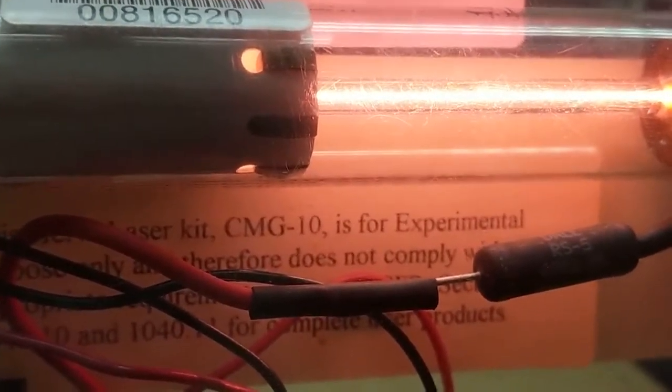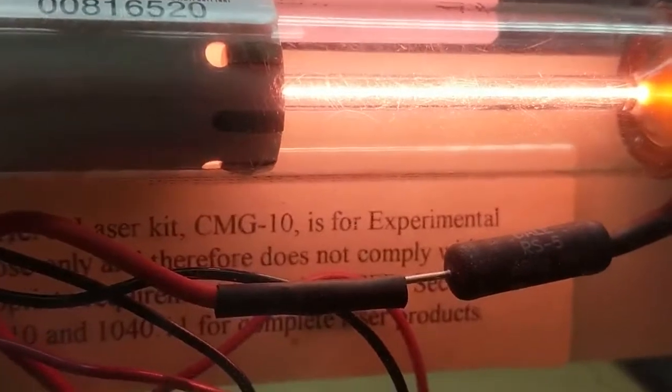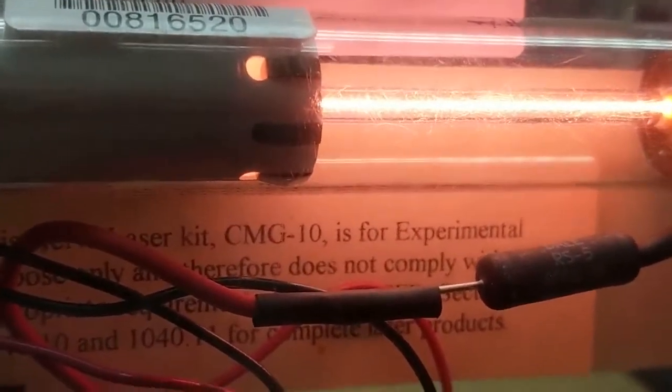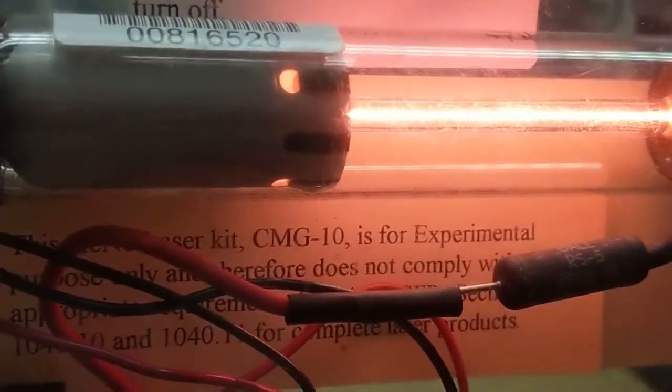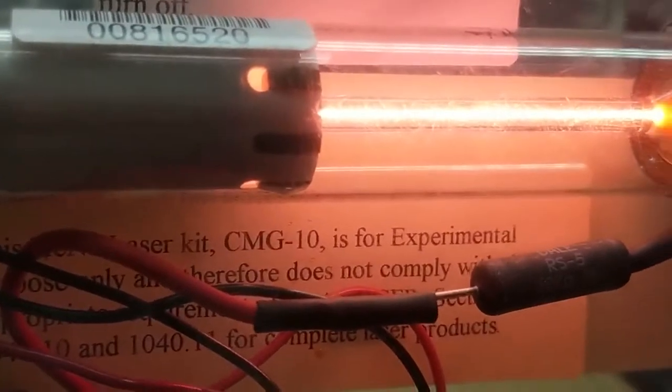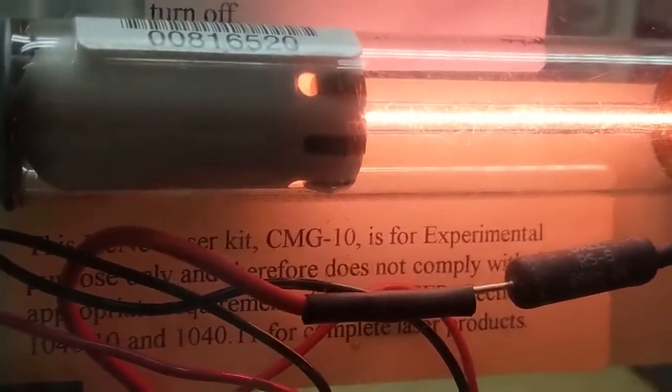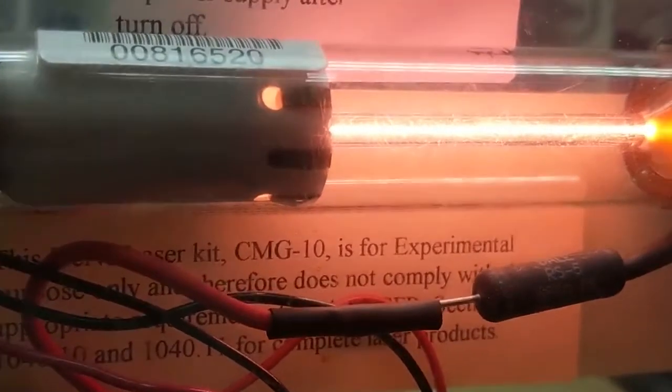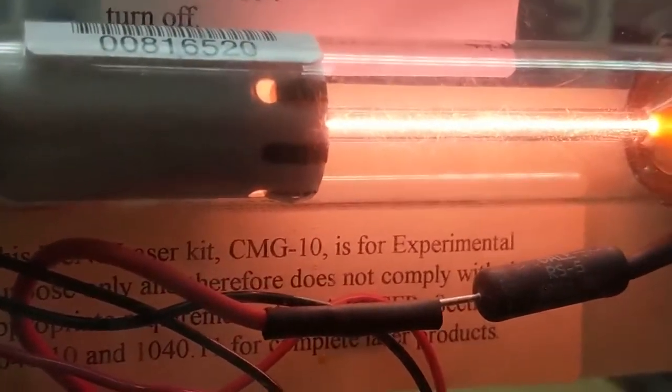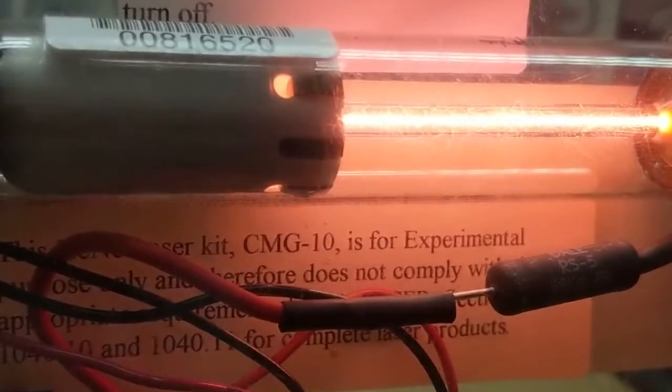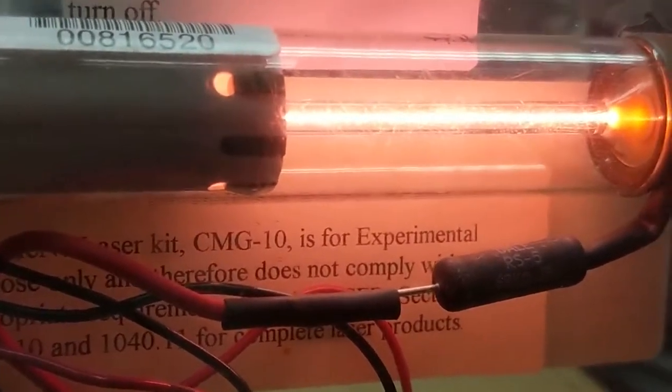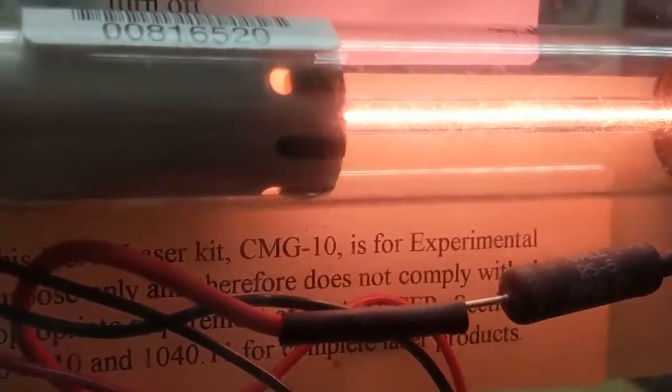That electron accelerates one way, the remaining positive ion accelerates the opposite way, they smash into other atoms that are already under electrical stress because they're in the strong electric field, and those atoms get ionized, and their electrons and ions start accelerating. So you get a cascade reaction.